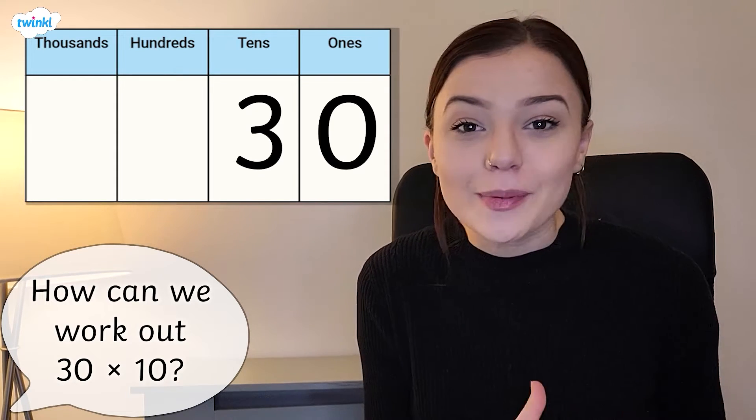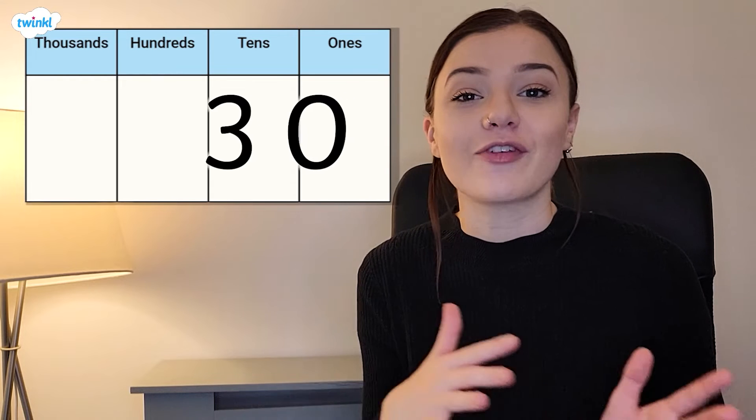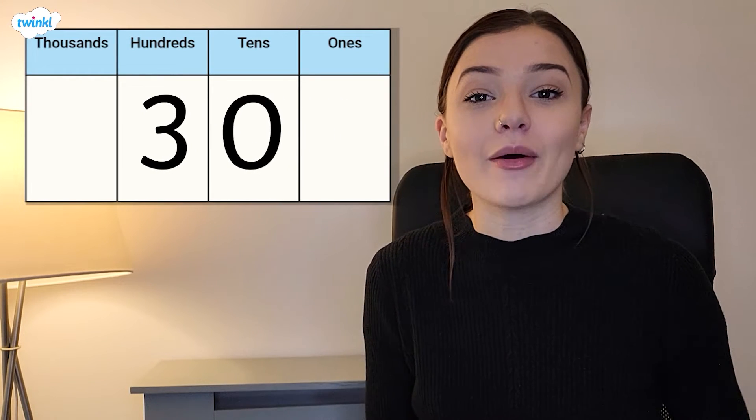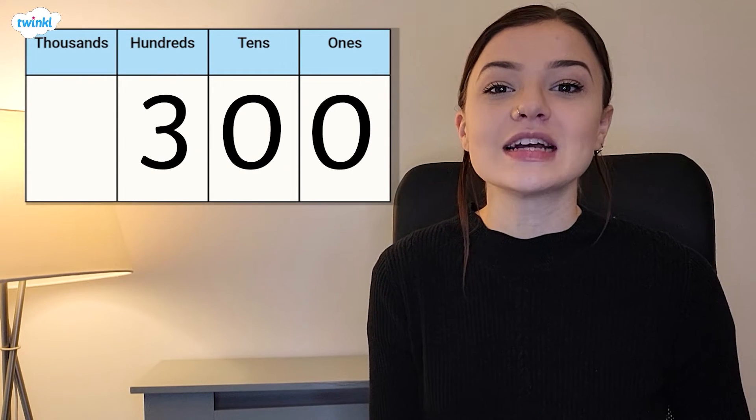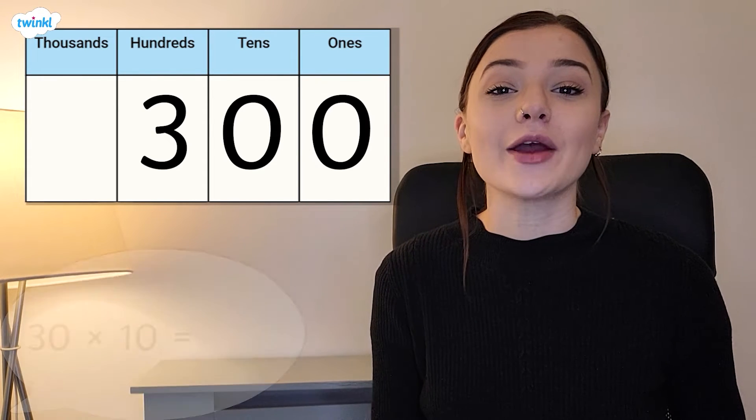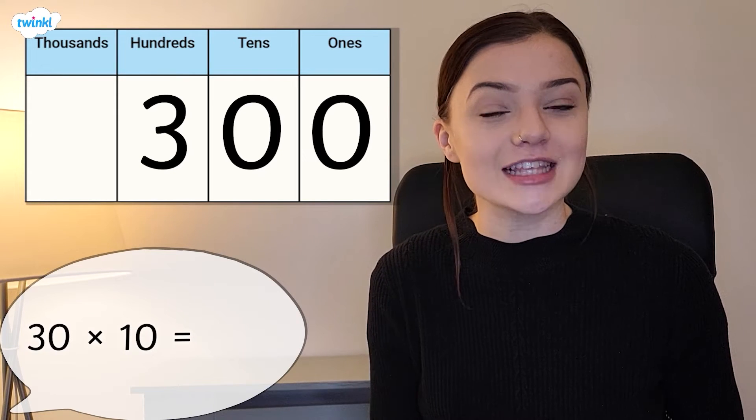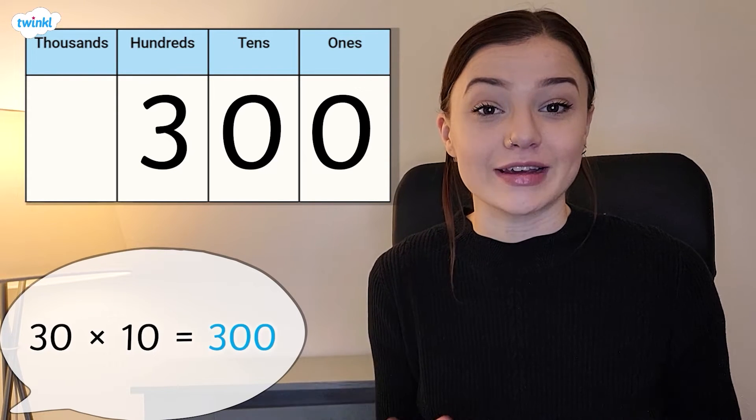Well, we know that in order to multiply a number by 10, we need to move our digits or our counters one place value column to the left. We now have zero in the ones column, zero in the tens column, and three in the hundreds column. We know that three hundreds are equal to 300, therefore 30 multiplied by 10 is 300.